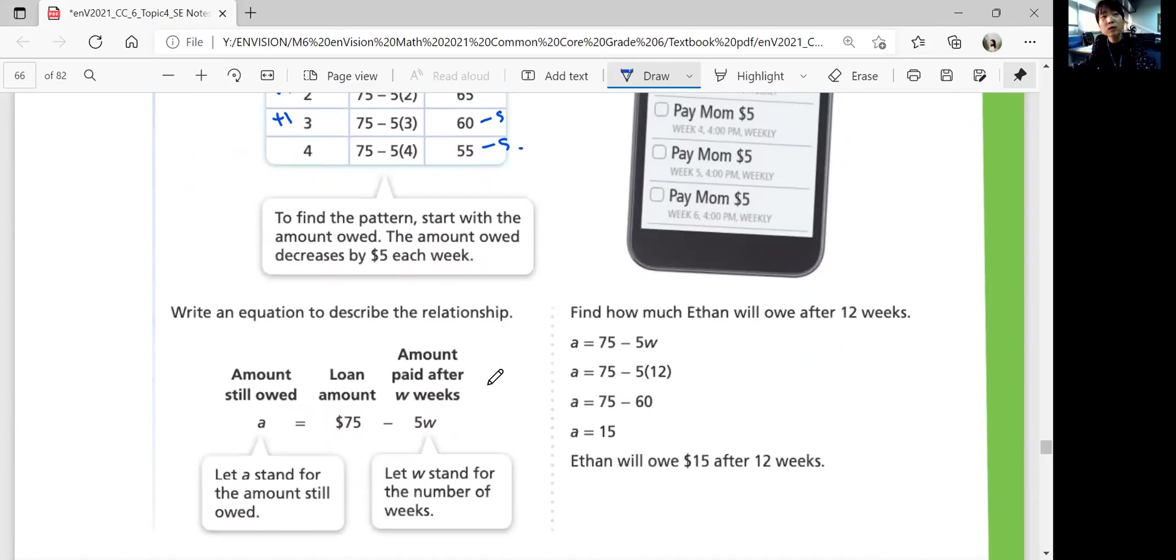So your equation would be the amount still owed will be A, and the loan amount, the first amount you're starting with is $75. Now you subtract 5 each week, so W will be the number of weeks you've already paid. So let's find out how much you owe after 12 weeks. Using this equation, 75 minus 5 times 12 will be 75 minus 60, which is 15. So after 12 weeks, which is about 3 months, he paid most of the amount, and he only owes $15 to his mom. He only has to pay 3 weeks more if he continues this pattern.